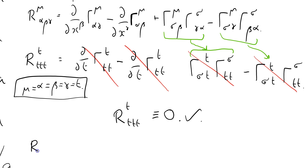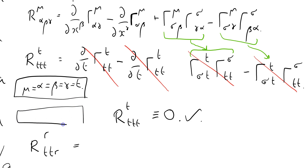I'm going to evaluate another component. Let's try R_TTTR. What does that equal? Well, from this formula, instead of all indices being T, now my restriction is: mu equals R, alpha equals T, beta equals T, and gamma equals R.